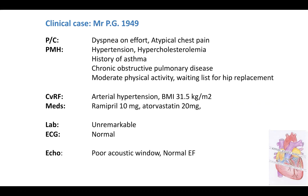We have a man of 71 years old who arrived to our attention for a recent episode of dyspnea on effort and atypical chest pain. From his history, we can find hypertension, hypercholesterolemia, and a history of asthma and chronic obstructive pulmonary disease.